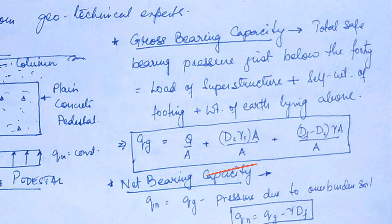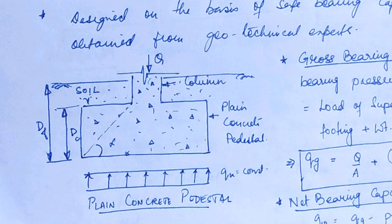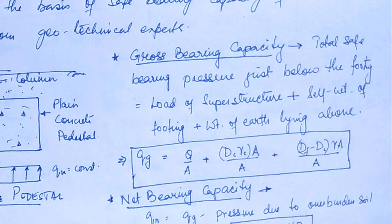QG equals the total load Q acting over area A, which is Q/A, plus DC·γC multiplied by A acting over area A, where DC is the depth of this concrete footing and γC is the unit weight of the concrete. The weight of earth lying above: the depth of soil lying above is DF minus DC, so we get the term (DF − DC)·γA acting over area A.